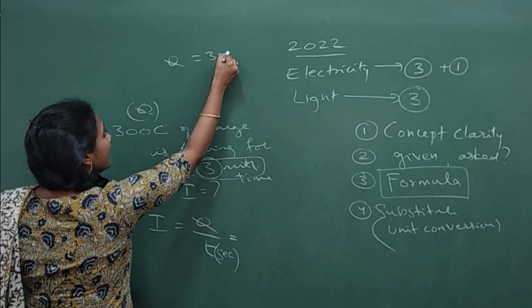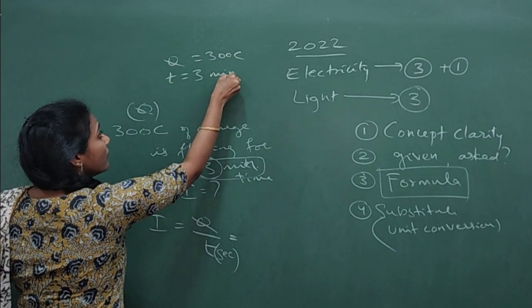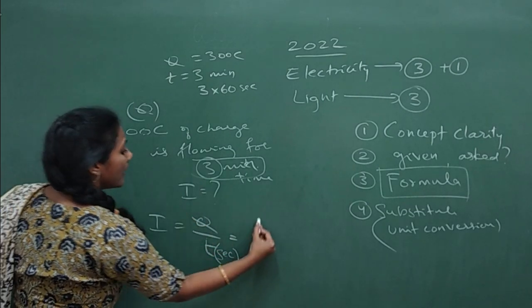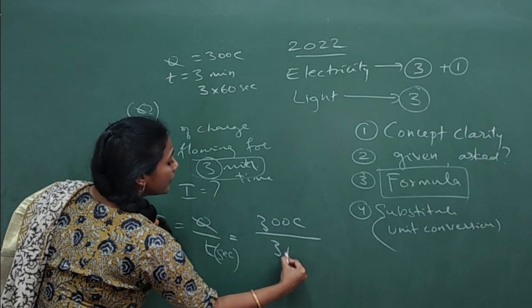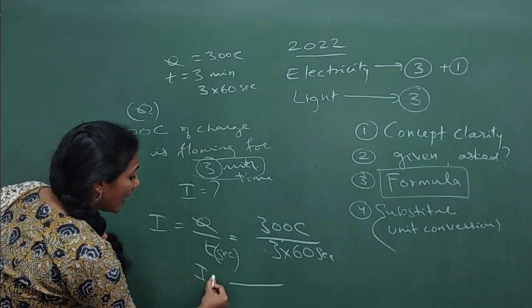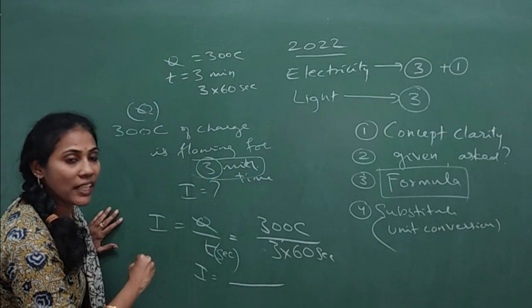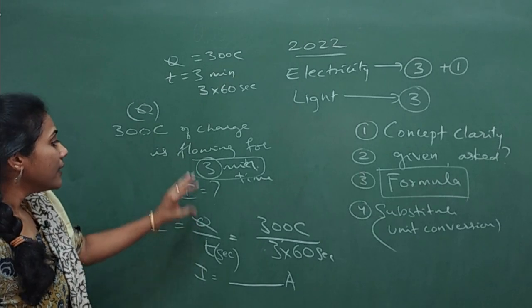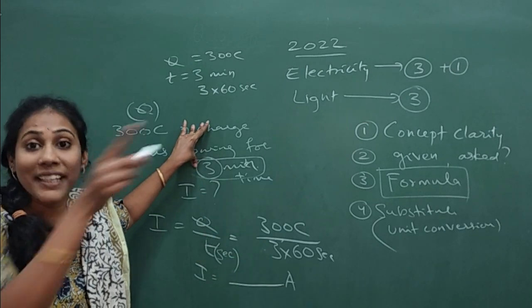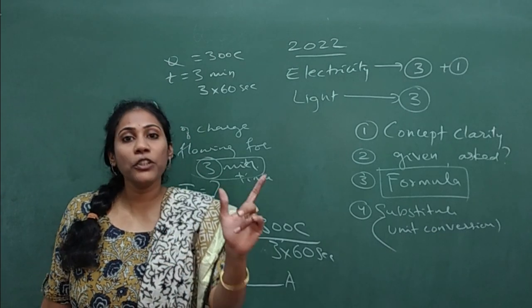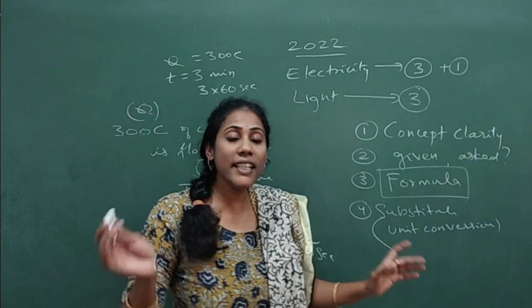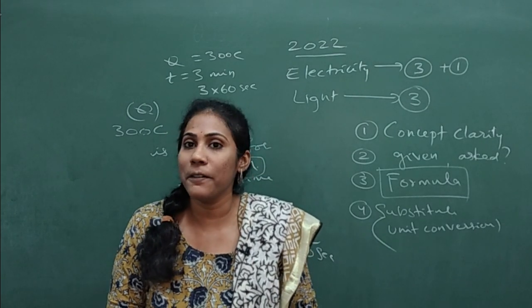Here, charge is equal to 300 coulombs. Time is equal to 3 minutes — convert this into seconds: 3 × 60 seconds. Now substitute: charge is 300 coulombs, time is 3 × 60 seconds, and calculate the answer. Whenever you give the answer, don't forget the unit — the unit of electric current is amperes. This unit conversion is very, very important. For the formula you need certain units, but in the question they may give another unit. Knowing when to convert and when not to convert is very, very important. You should have an idea on all these things to get full marks.